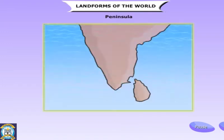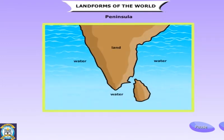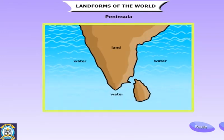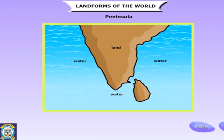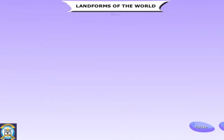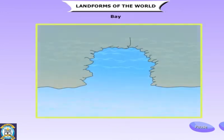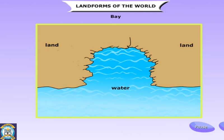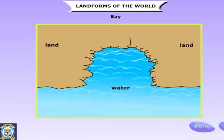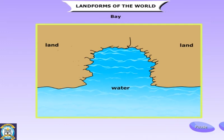A peninsula is land surrounded by seas on three sides. The southern part of India is a peninsula. The largest peninsula in the world is the Arabian Peninsula. A bay is water surrounded by land on three sides — it is the opposite landform of a peninsula. The Bay of Bengal and the Bay of Biscay are examples of a bay.